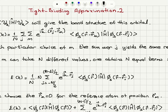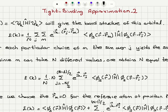If you multiply 1 over square root N with 1 over square root N, we get 1 over N. This gives a double summation over j and m: e to the ik·(rj - rm), because we take the complex conjugate of the second wave function phi_s(r - rm), times the Hamiltonian operator, times phi_s(r - rj). This is the expectation value of the energy.